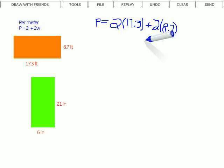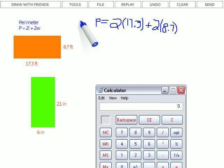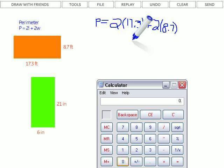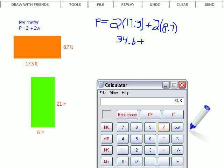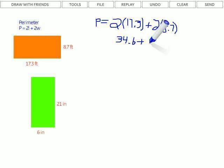Okay, we've filled in our values, so now we're just going to go ahead and do some multiplication. Let me grab the calculator here. 2 times 17.3, that gives us 34.6, so we have 34.6, plus 2 times 8.7, that is 17.4.